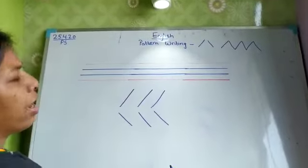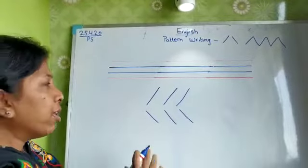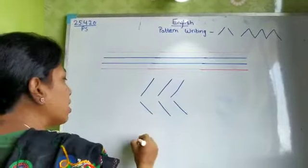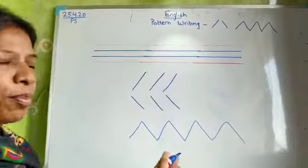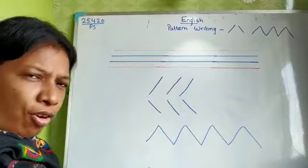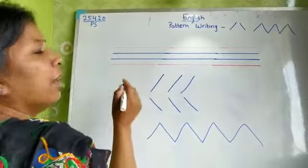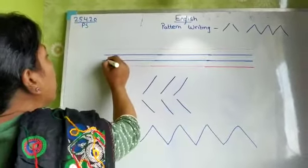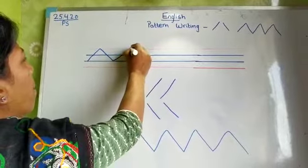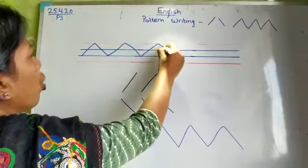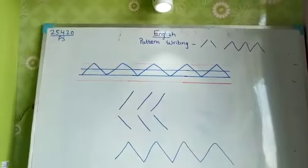I hope you all are practicing this. With this, one more pattern — the same, like this — we will learn to make. Children, you will practice it in your rough copy with crayons or with color pencil. Now the another one: how you are moving up and down, going up and down. So like this you will learn to make slanting lines.